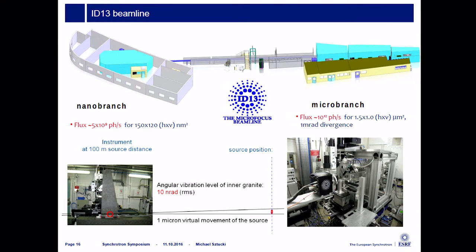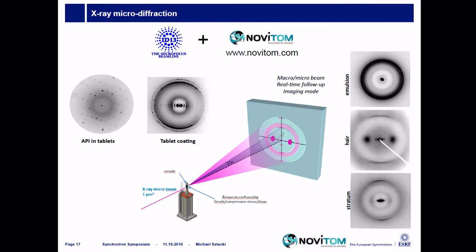The last technique I want to present uses not a large beam — the large beam we've been talking about is a few hundred microns. Here instead we go down to a beam of about one micron size, focused with adapted optics directly on the sample position. This is the so-called micro branch of this beamline. There is also a nano branch opened a few years later, where we can go down to a beam size of about 150 by 120 nanometers. With this small beam you can raster samples through the beam — pharma tablets to detect diffraction patterns of active ingredients, tablet coatings, hair, emulsions, and other things. The most important aspect is that you scan the sample with high resolution and obtain spatial information, as shown in the following slide.